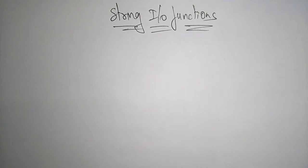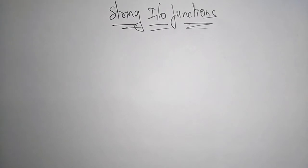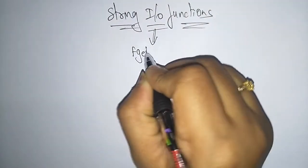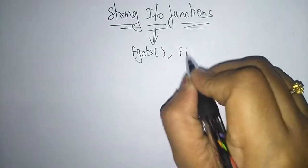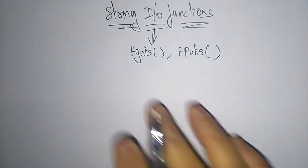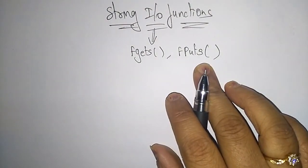Welcome back. Continuing with the topic of files — in the previous video I explained about the different high-level I/O functions used for files. Now let us see the string I/O functions. The string I/O functions used are fgets and fputs. fgets is for reading — it reads from a file — whereas fputs is for writing into a file.